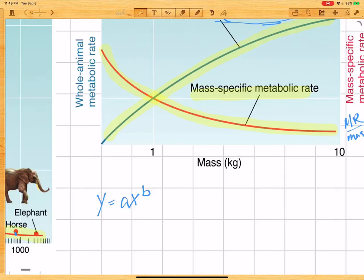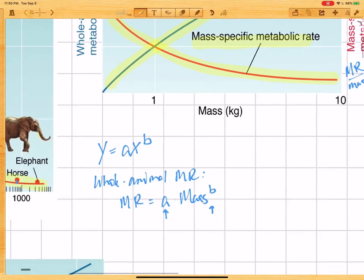Okay, and a power law is just simply an equation of the form y equals ax to the b power. And it makes these nice curves, but... And so in the case of mass here, let's see. So whole animal metabolic rate. We have metabolic rate equals a times mass to the b power, where a and b are constants. Okay, so in general, straight lines are easier to work with, and we can easily make this into a straight line by taking the log of each side.